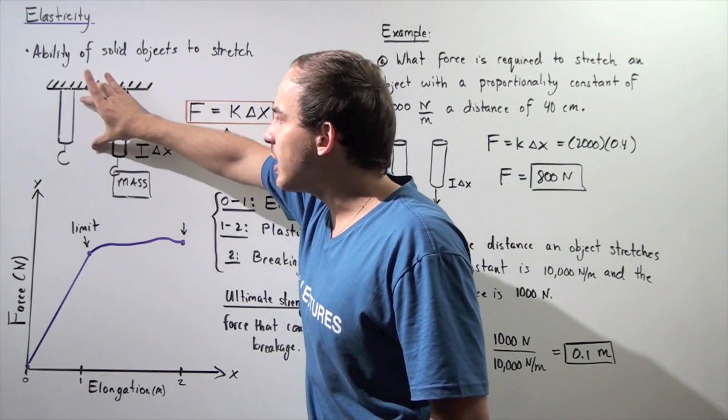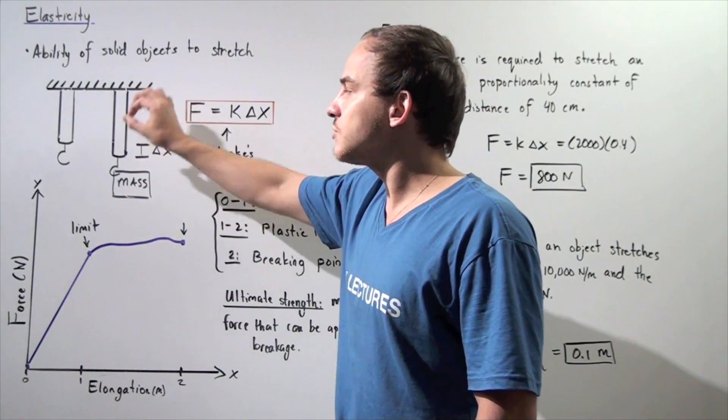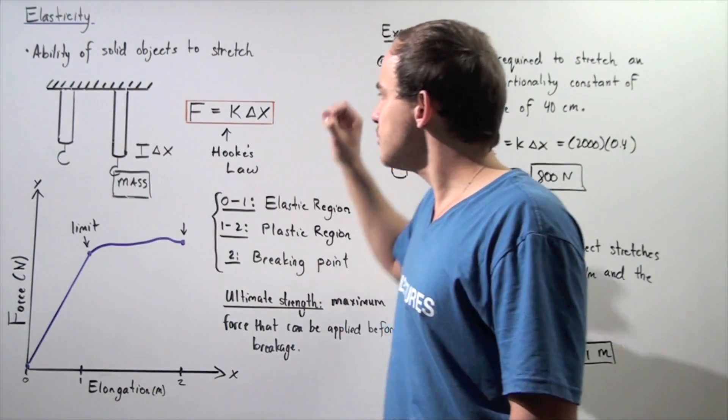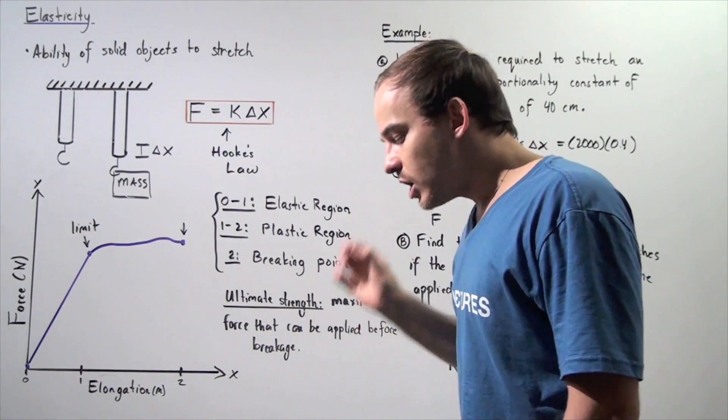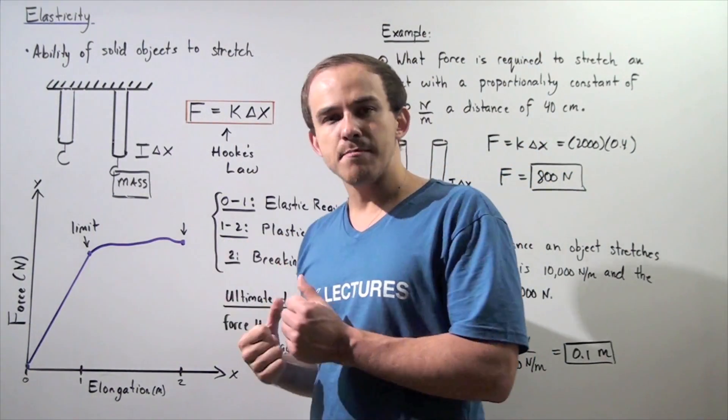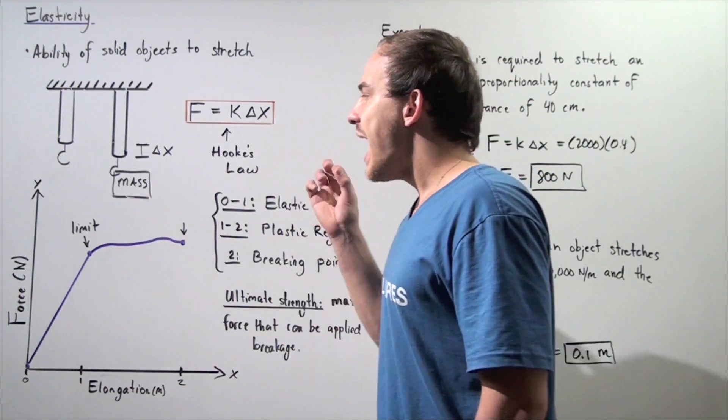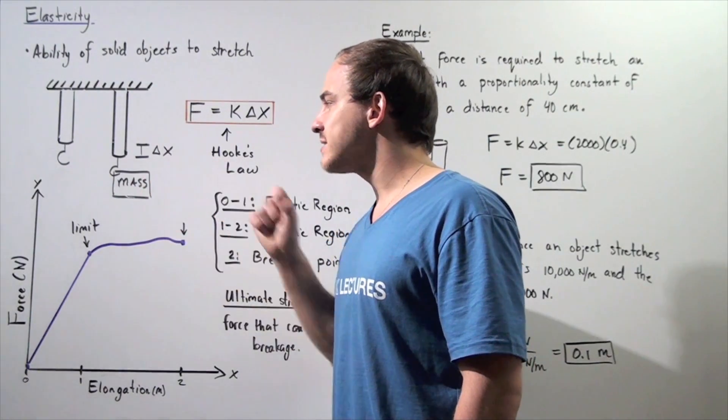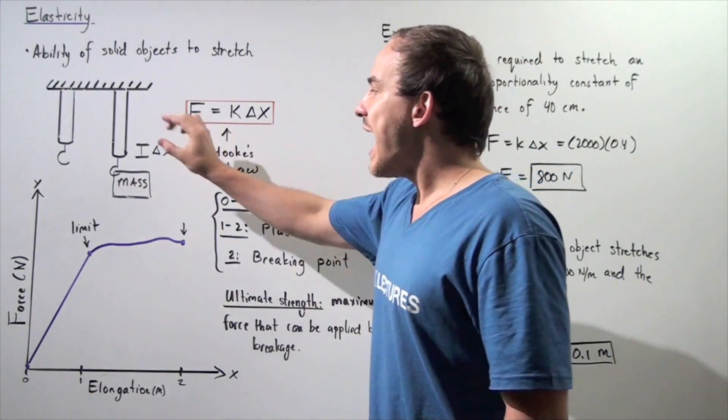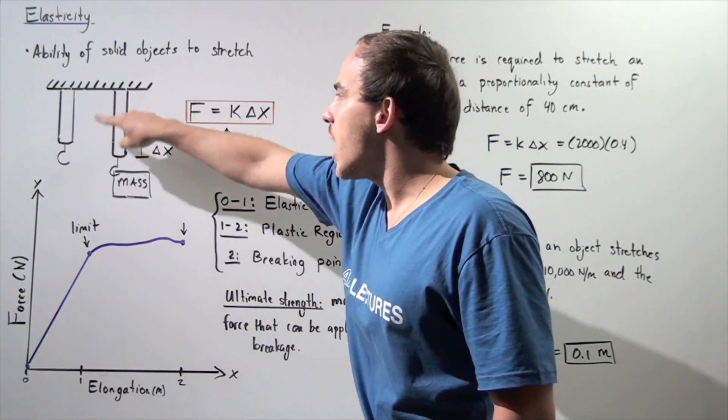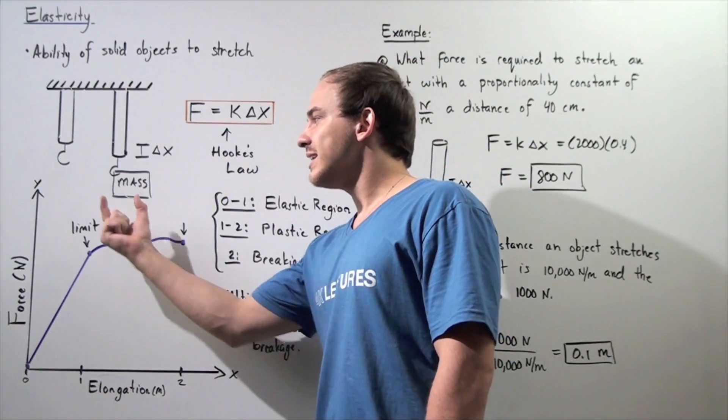Now let's suppose we have the following column, and the column is stationary, it's not stretched. So in this position, the object's change in x is zero. Now let's suppose we take a very heavy mass and we hook it onto our solid column, and the force of gravity acts on the mass, which in turn acts on our solid object, and the distance that our object stretches is given by a change in x.